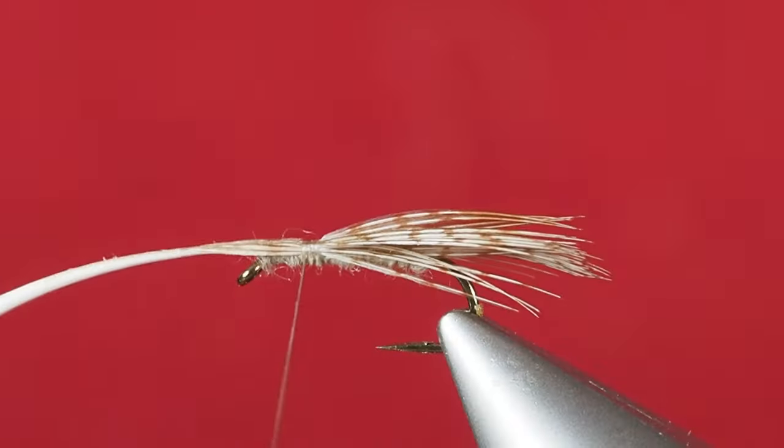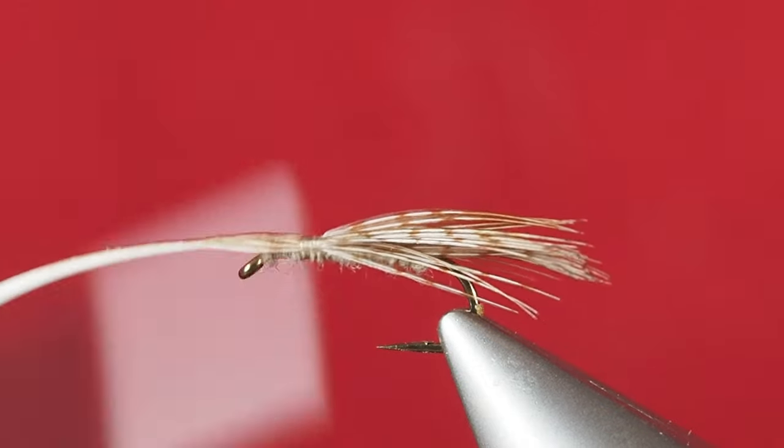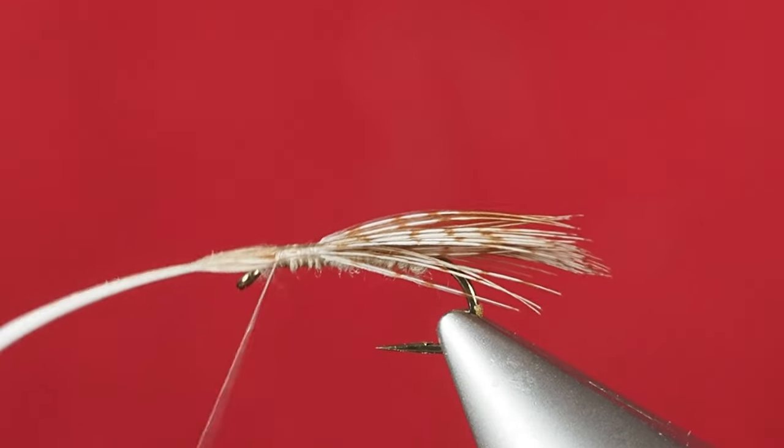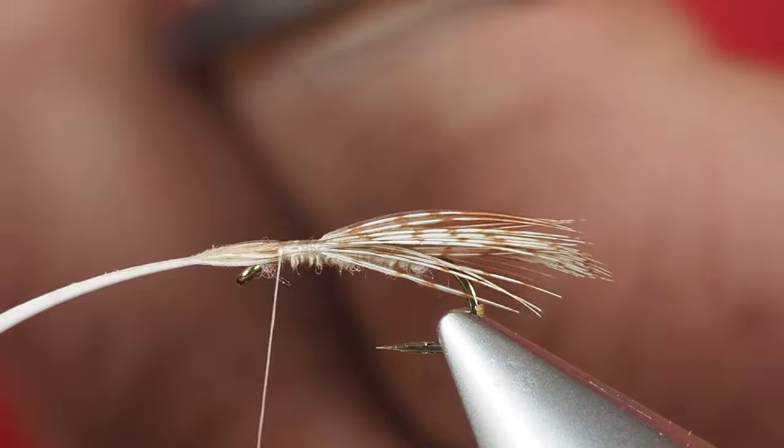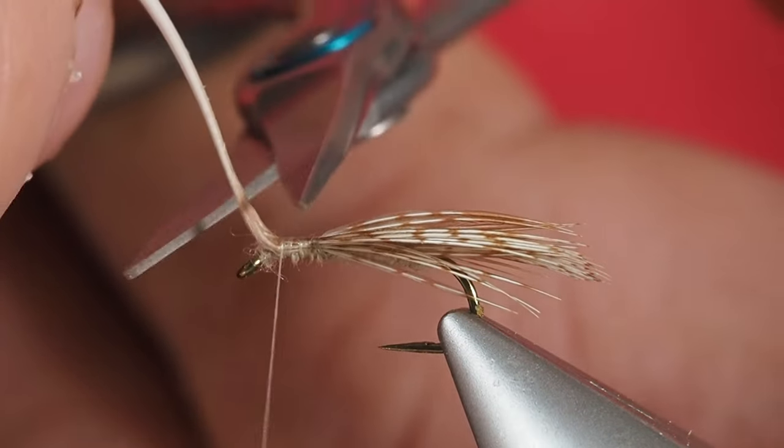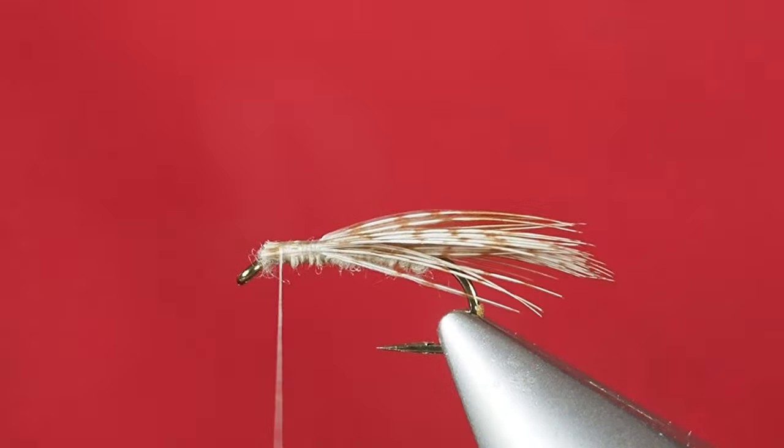Now we've got a nice wing laying over the top here. I'm just going to take my thread forward. We'll go ahead and hold this stem straight up and secure it. Now I can go ahead and clip that off.